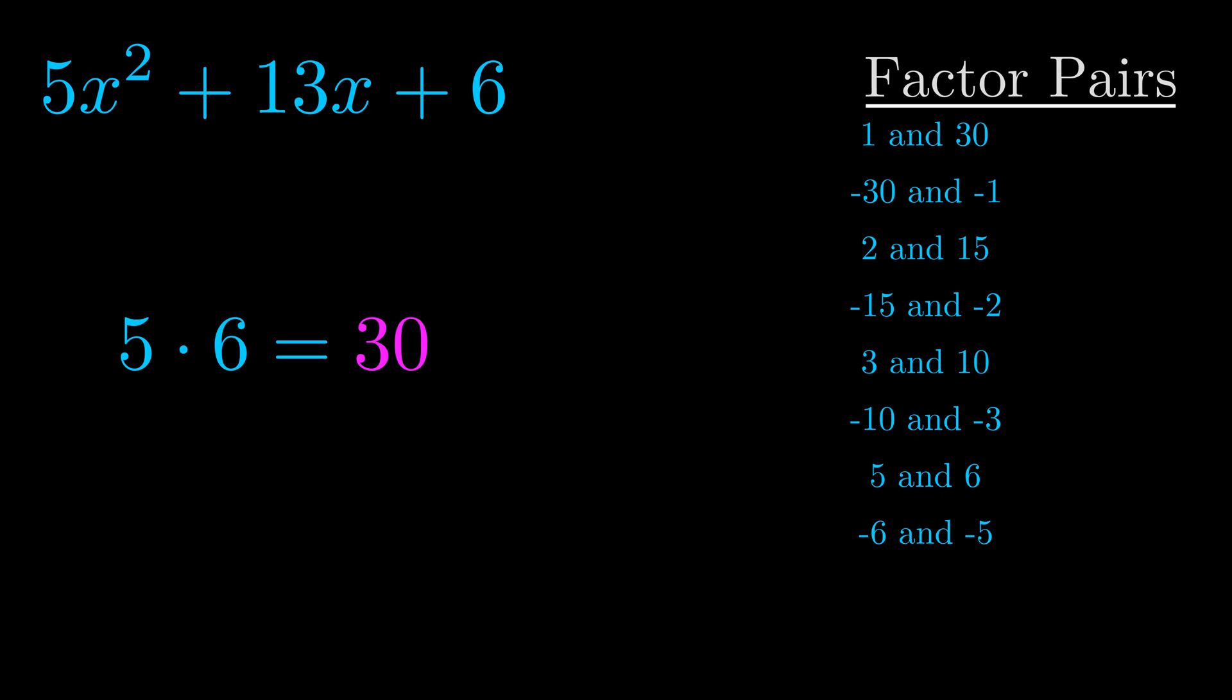The b value is the coefficient on the x term. That's the middle term, the one that we haven't done anything with yet. And really this is the only factor pair that we need.